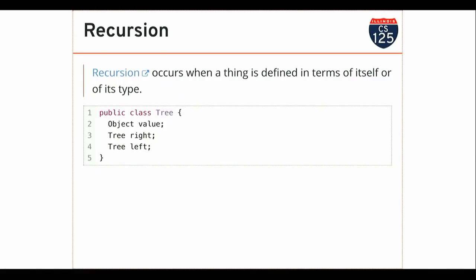This property of data structures is called recursion. We're going to talk about recursive algorithms and implement recursive code in this class. But recursion itself is a bigger concept than just a recursive function. The broadest possible definition of recursion is when something is defined in a way that references itself — a thing is defined in terms of itself or of the same type.